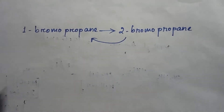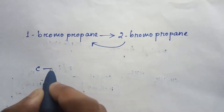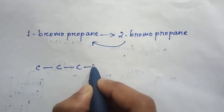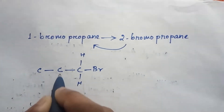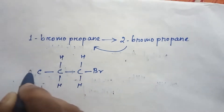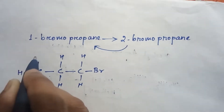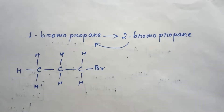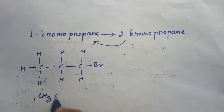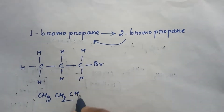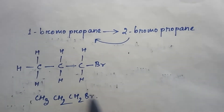First, we will write the formula of 1-bromopropane. We can write it as CH3-CH2-CH2-Br.